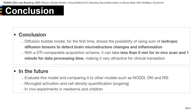In conclusion, our new model, the Diffusion Bubble model, for the first time shows the possibility of using isotropic diffusion tensors to detect brain microstructure changes and inflammation. With a DTI-comparable acquisition scheme, it can take less than 5 minutes for the in vivo scan and 1 minute for data processing, which makes it very attractive for clinical translation. In the future, we are going to evaluate this model and compare it to other models such as NODDI, DKI, and RSI.